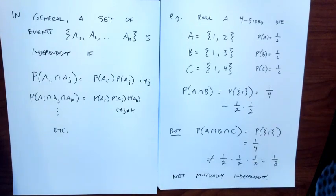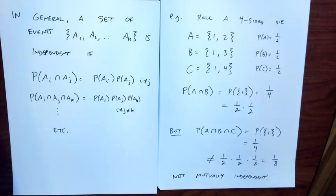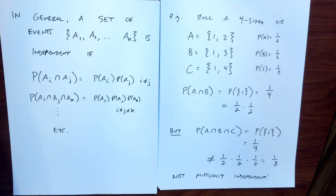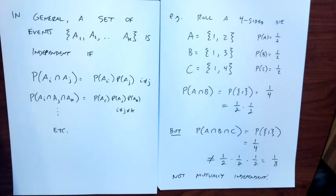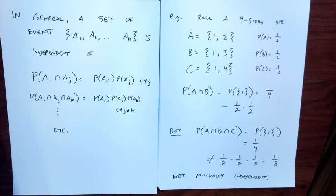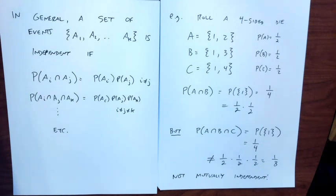However, the probability of A and B and C — the intersection of all three — is again the probability of getting one, which is one-quarter. That's not equal to one-half times one-half times one-half, which is one-eighth. So these events are not mutually independent. Pairwise everything is fine, but looking at triples reveals a problem. Independence is such a key property for understanding probability that we have to discuss the possibility it may not hold.